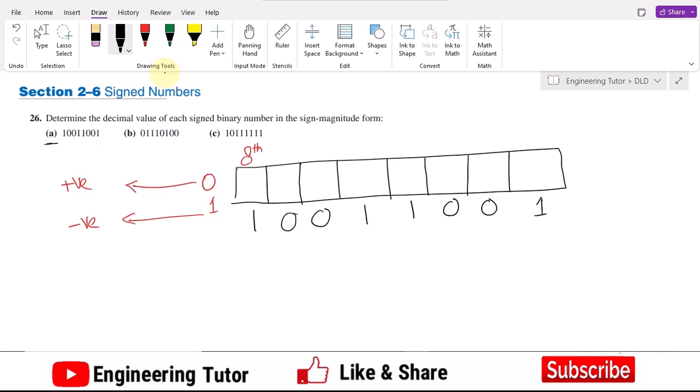These are basically 2 raise power 0, 2^1, 2^2, 2 raise power 3, 2 raise power 4,